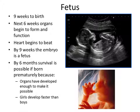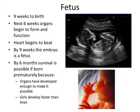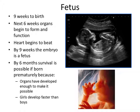Ten days after fertilization, the zygote attaches to the uterine wall. Once attached, the inner cells become the embryo — that's about weeks two to eight. So if people refer to a baby in the womb as an embryo, that's only weeks two through eight. The fetus stage is nine weeks to birth. The next six weeks organs begin to form and function, the heart begins to beat, and by six months survival is possible if born prematurely. Notably, girls develop faster than boys, so premature boy births carry greater concern — the key organ doctors wait on is the lungs.